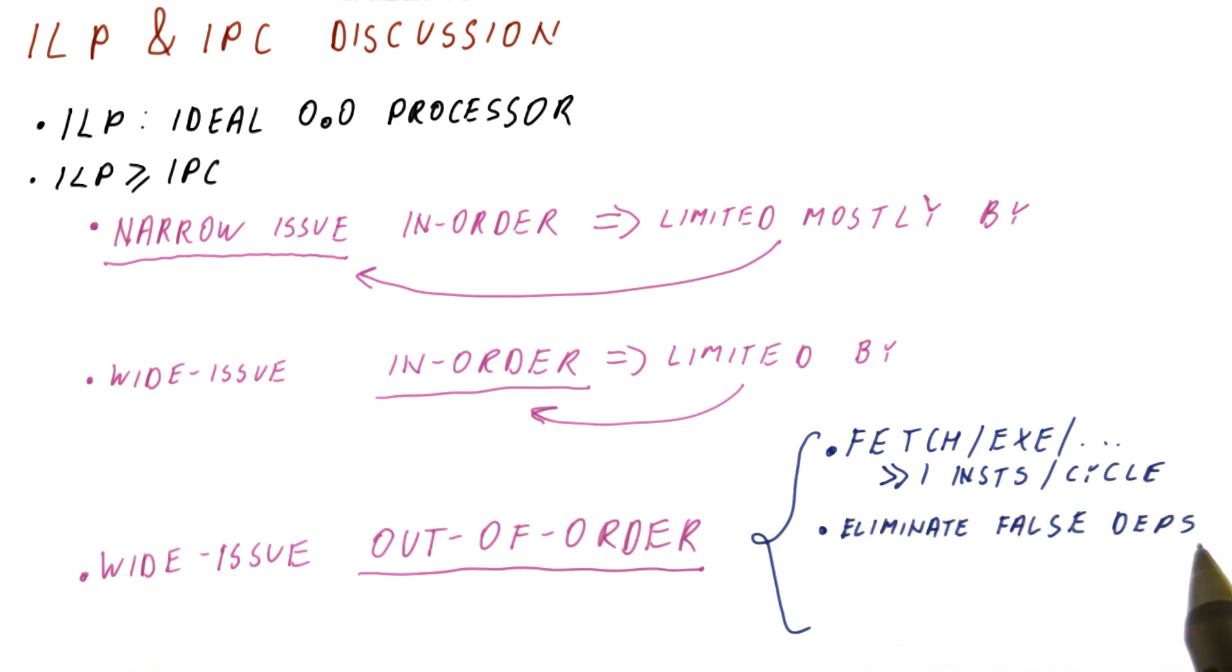It should be able to eliminate false dependencies, because if we have to obey all sorts of dependencies, then that's going to limit our IPC too and bring us far away from the ideal ILP.